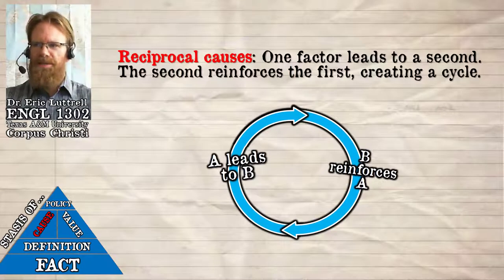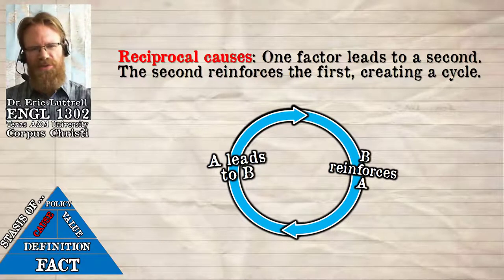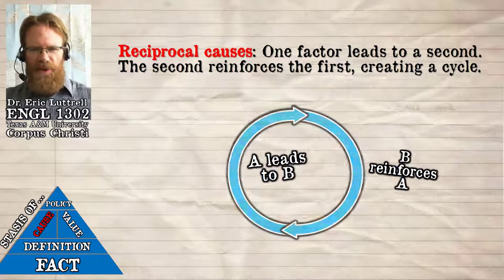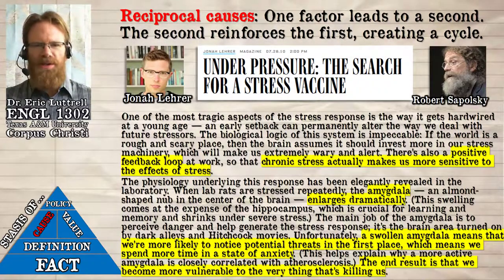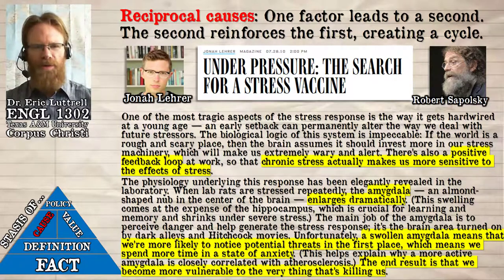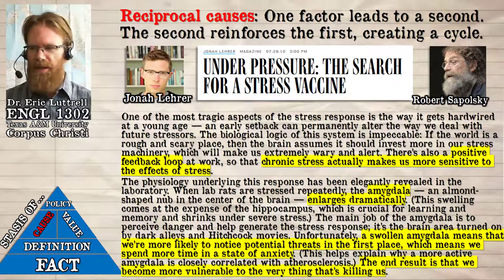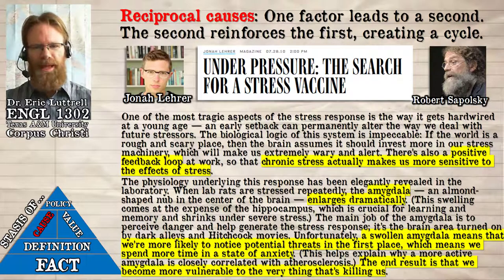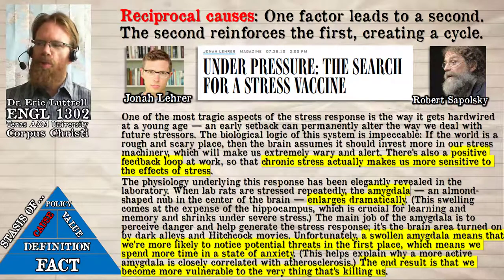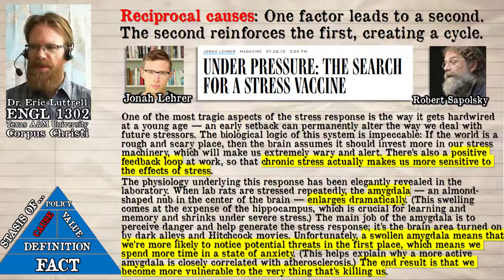Finally, there are reciprocal causes — when one factor leads to something else happening and that second thing reinforces the first, creating a feedback loop: A leads to B, B leads to another A, and so on. Going back to Sapolsky's rat studies, stress can cause weaker immune systems and heightened alertness to danger, and being more alert to danger causes you to see or think of more scary things, causing even more stress. A positive feedback loop is not always a good thing — it's where a reciprocal cause magnifies itself, getting larger and larger. Joan Allaire points out that chronic stress actually makes us more sensitive to the effects of stress, because the amygdala — the part of the brain that deals with the fight-or-flight response — gets much larger when lab rats are repeatedly stressed.